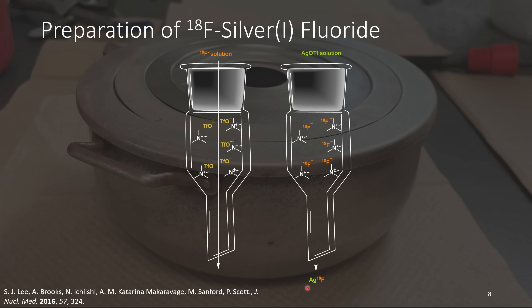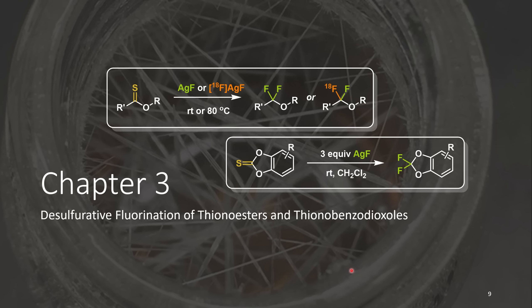This is a procedure that was reported by Sanford and co-workers, and this is what we ended up using as our method for producing 18F silver fluoride. This talk will primarily feature two areas of my research: first, the desulfurative fluorination of thiocarbonyls with silver(I) fluoride, as well as the fluorination of thionobenzodioxols with silver(I) fluoride, forming both difluoroethers as well as difluorobenzodioxols.